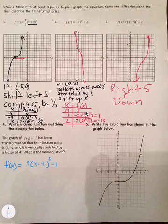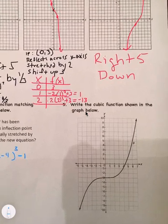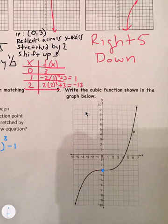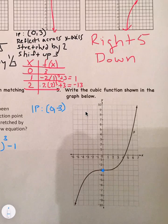Now number 5 says: write the cubic function shown in the graph. First, figure out the inflection point. Looking at the graph, the inflection point is at (0, negative 3). The hard part is figuring out the a value. We can agree it's positive because the graph goes up from left to right.